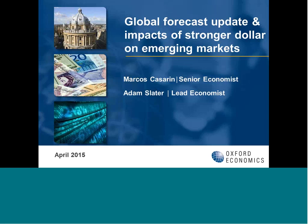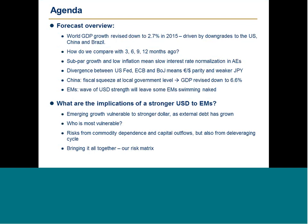With that, I'll kick off. The agenda for today: we'll start with a forecast overview. We recently cut world GDP growth down to 2.7% this year, driven by downgrades to the U.S., China, and Brazil. Then we're going to compare our forecast with 3, 6, 9, and 12 months ago. Then we're going to go through the links between subpar growth, low inflation, and the slow rate normalization in the advanced economies.